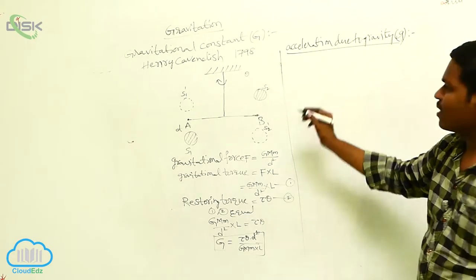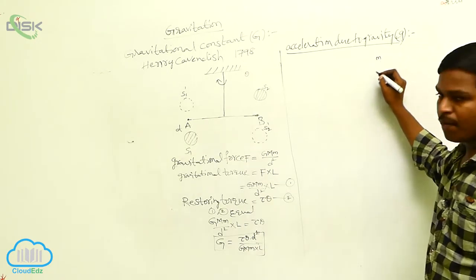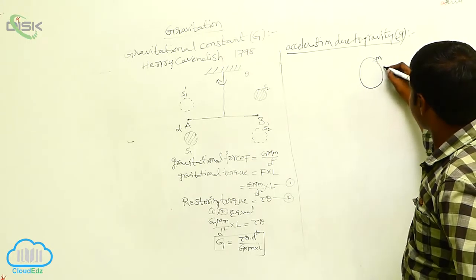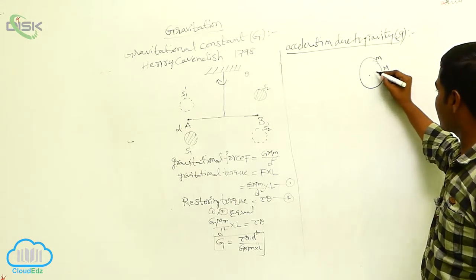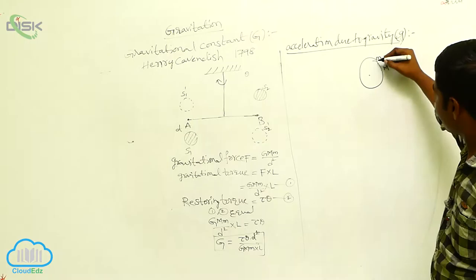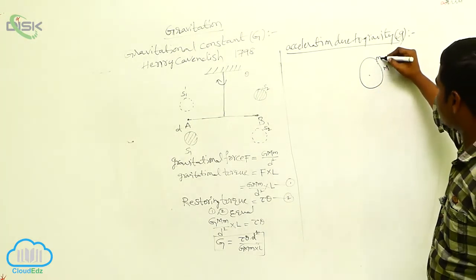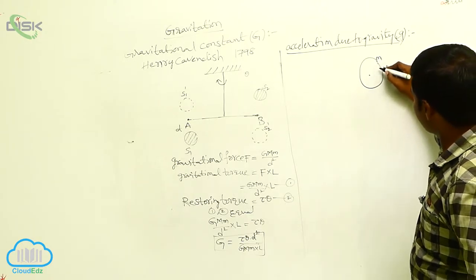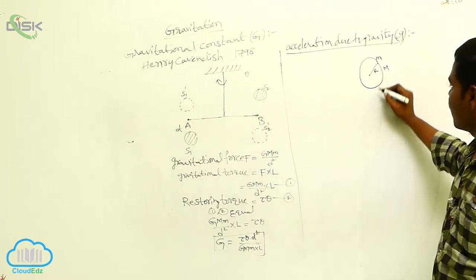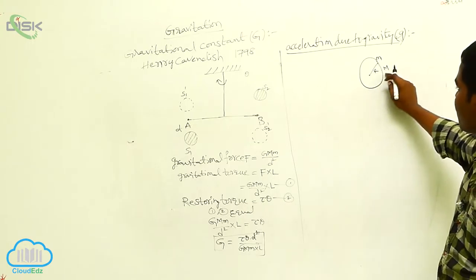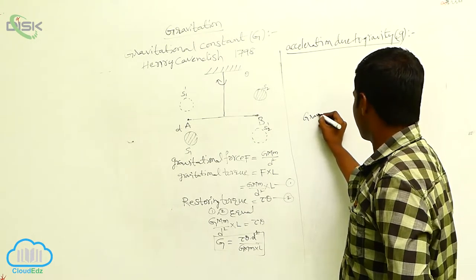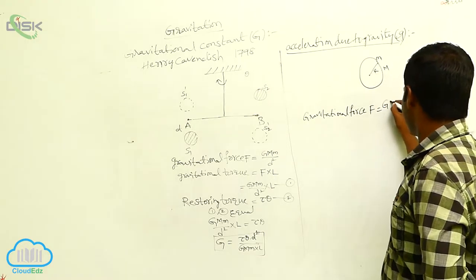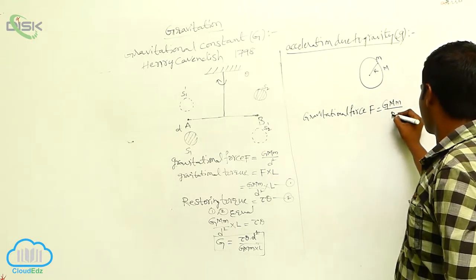Considering a small m mass of an object on the surface of a planet of capital mass M. Here, capital M is the mass of the planet and small m is the mass of the object. The distance between these two masses is capital R. Then the gravitational force acting between these two masses is F = GMm/R².